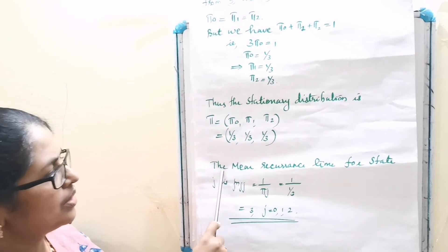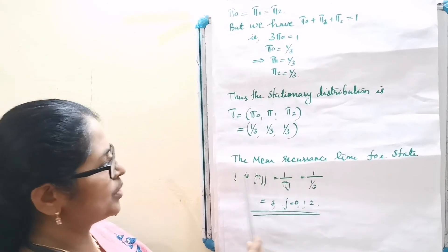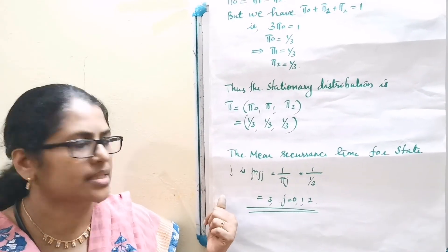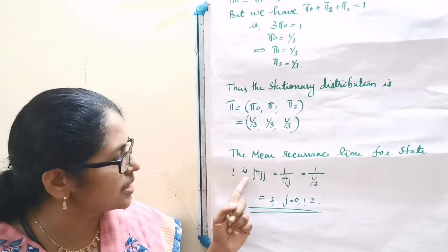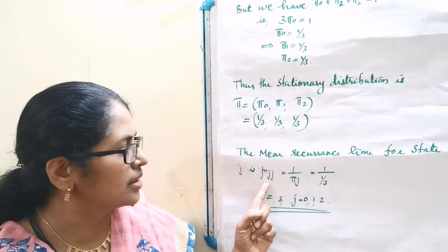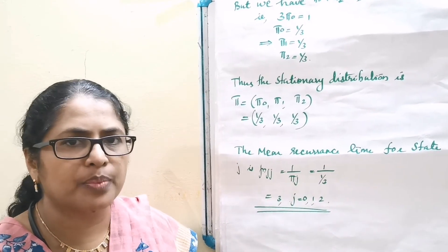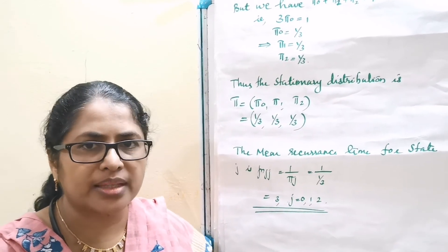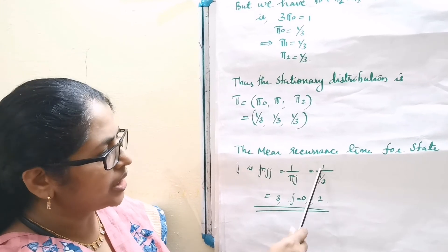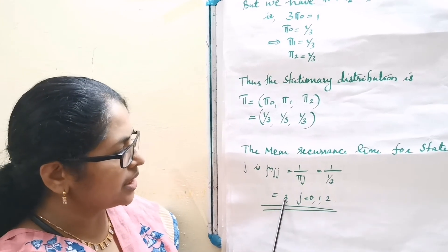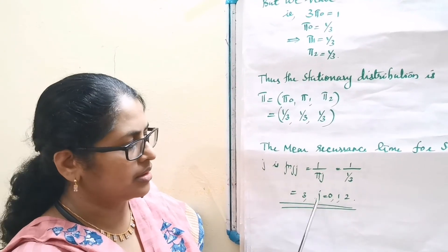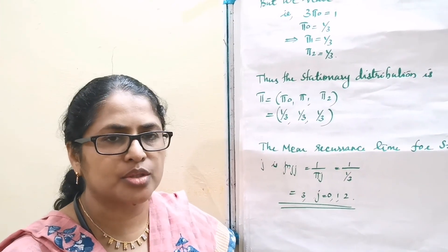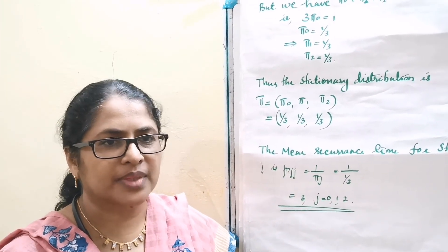The mean recurrence time for state j is μjj = 1/πj = 1/(1/3) = 3, for j = 0, 1, and 2. Thank you.